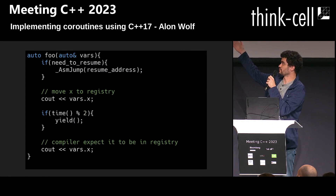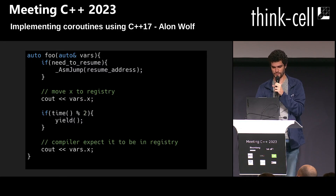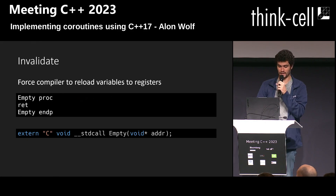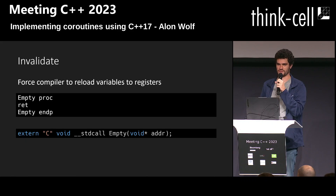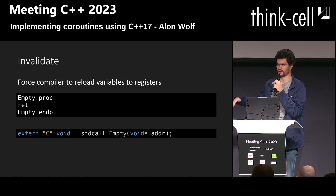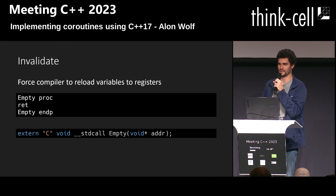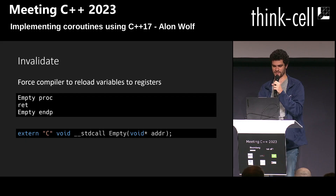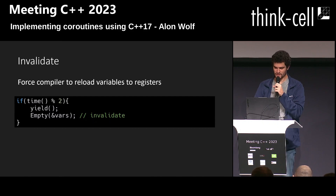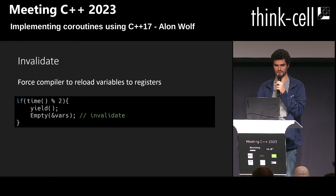This is used to implement resume. When we enter the coroutine, we first check if we need to resume somewhere and then we resume to it. But the problem is that after resume, the compiler may assume that some variables are in the registers, which might not be the case because we are jumping to an arbitrary instruction. So I wrote an empty assembly procedure just to force the compiler to reload the variables again.